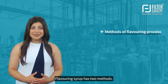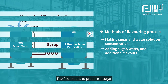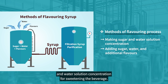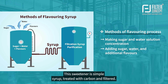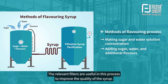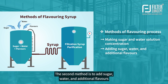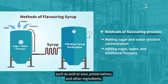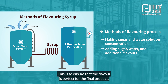Flavoring syrup has two methods. The first is to prepare a sugar and water solution concentration for sweetening the beverage. This sweetener is simple syrup, treated with carbon and filtered. The relevant filters are useful in this process to improve the quality of the syrup. The second method is to add sugar, water, and additional flavors such as acid, sour, preservatives, and other ingredients, to ensure that the flavor is perfect for the final product.